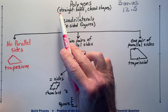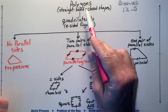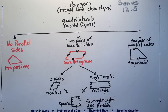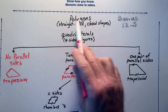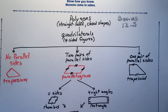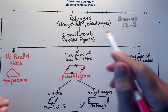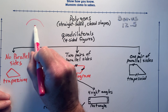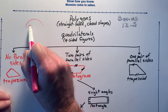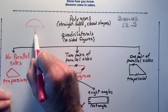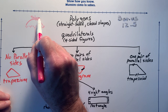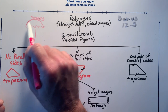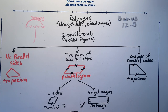I wanted to discuss polygons with you today. Polygons are straight-sided, closed shapes. That is the very top of our flowchart — we're starting with polygons. If you think of an umbrella at the beach, polygons is the main canopy of the umbrella. It's the main part because everything underneath here is a polygon.